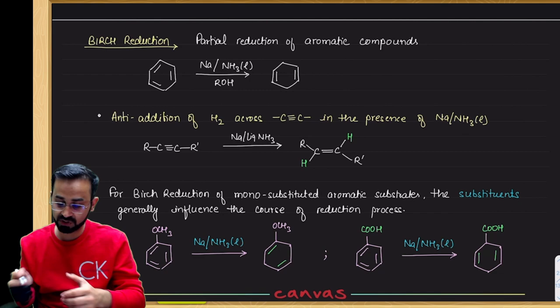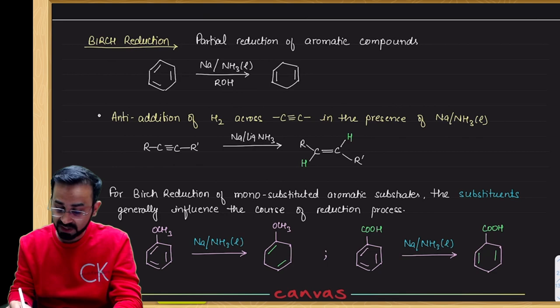Let's discuss Birch reduction and Bouveault-Blanc reduction. Birch reduction can be done with sodium in the presence of liquid ammonia. These are two tasks.